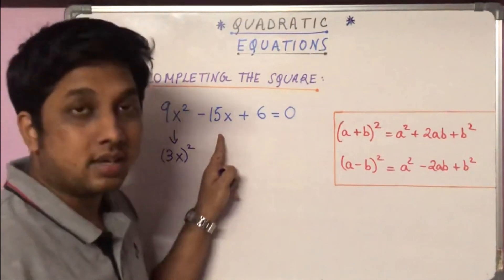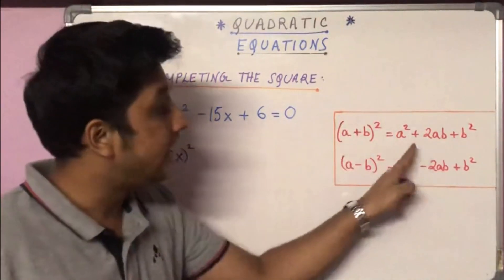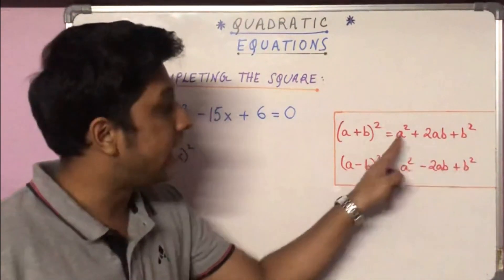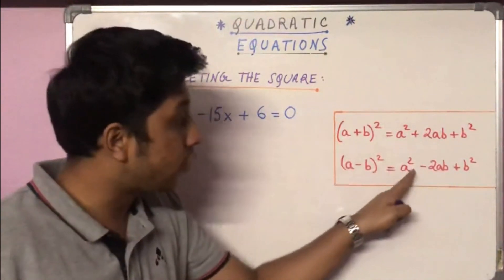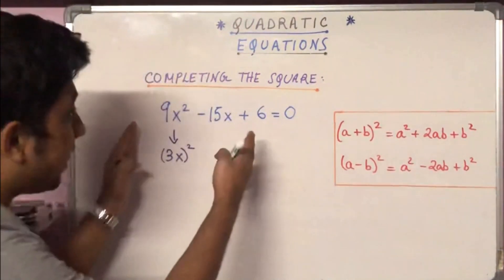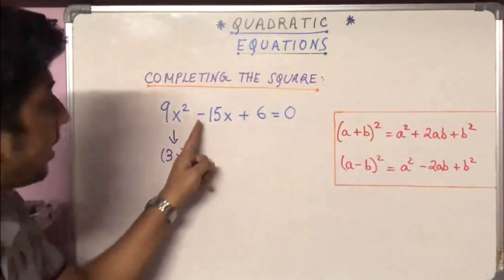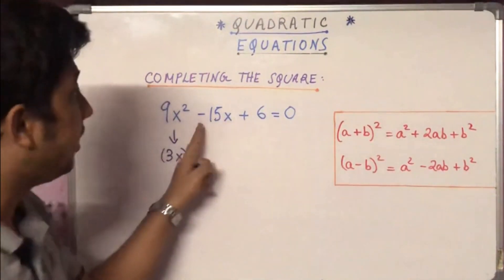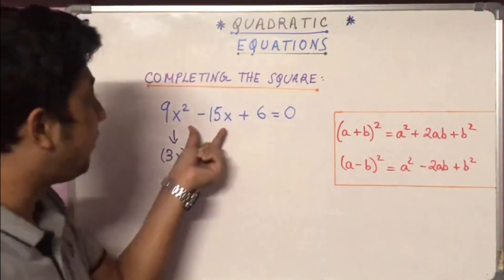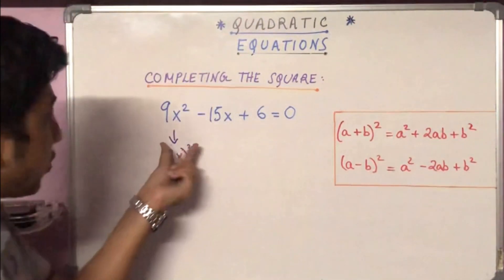After this, we need to change the middle term so that we get one of these two forms: a² + 2ab + b², or a² - 2ab + b². Because a² + 2ab + b² = (a + b)² and a² - 2ab + b² = (a - b)². Since the middle term is negative, we try to bring this expression into the form a² - 2ab + b², meaning the -15x term corresponds to -2ab, and a is 3x.